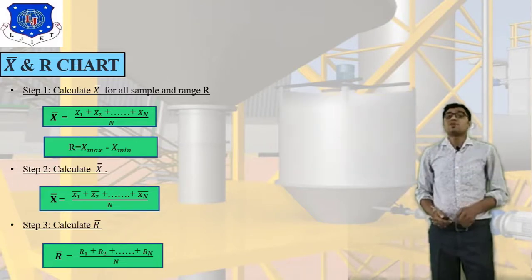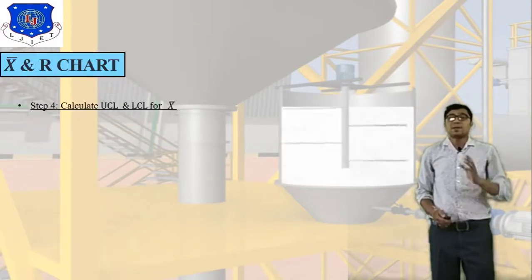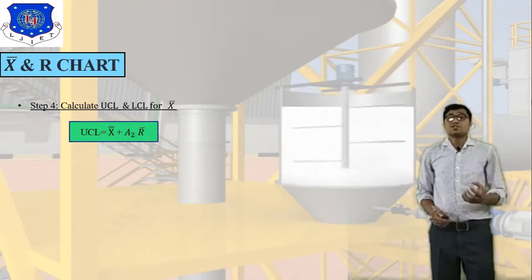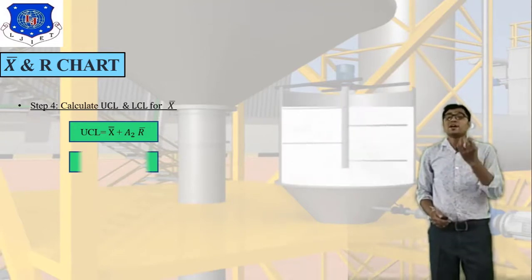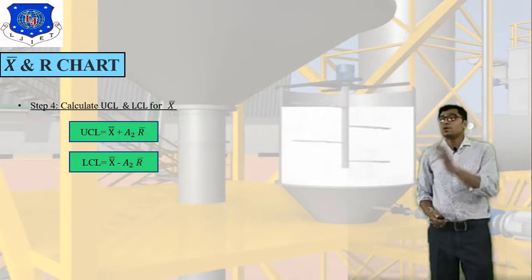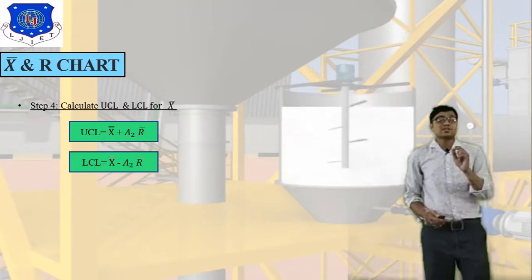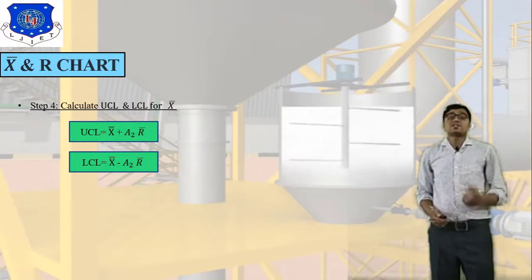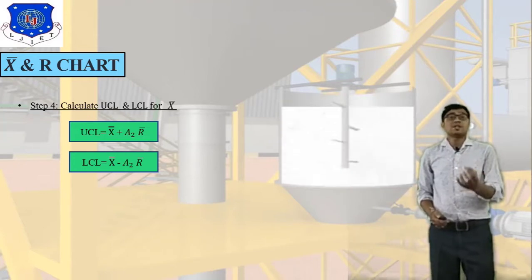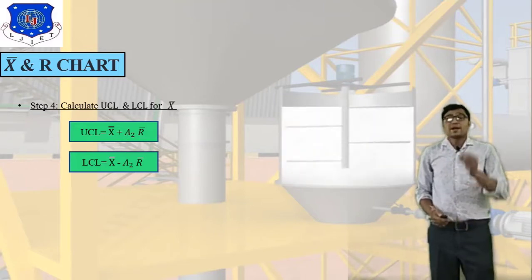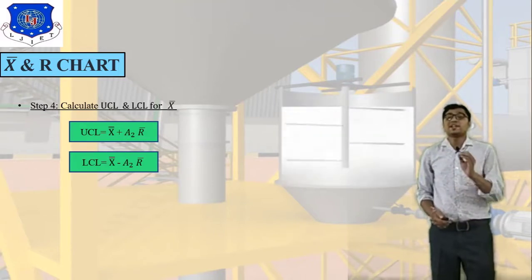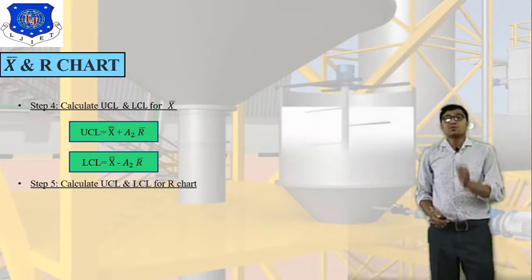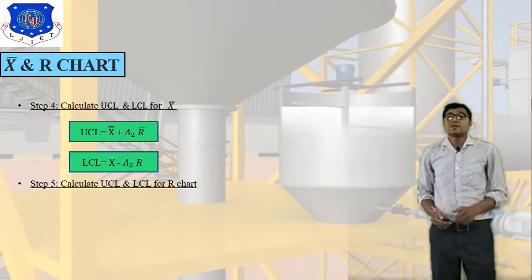Step 4: calculate UCL and LCL. UCL stands for upper control limit and LCL stands for lower control limit. For the X-bar chart: UCL = X-double-bar + A2 × R-bar, where A2 is a constant given in the numerical problem. LCL = X-double-bar − A2 × R-bar.